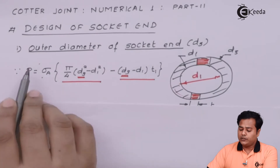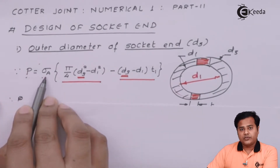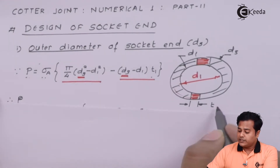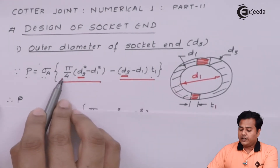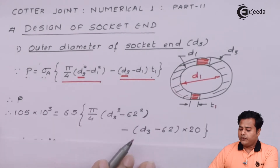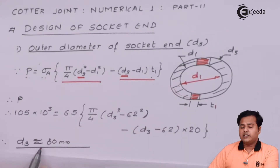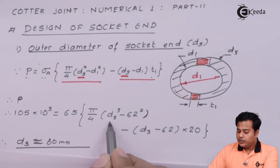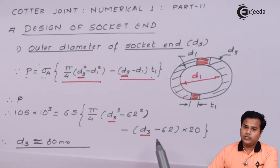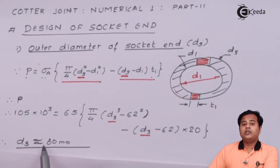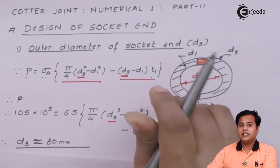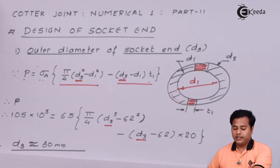After substituting the values for axial load P, allowable tensile strength, and thickness T1 which we have already calculated, we solve the expression. You can use the equation/expression mode of your calculator to solve when the unknown D3 appears in multiple terms. The answer is approximated to D3 equals 80 mm. So the preferred outer diameter of the socket end is 80 mm — that is our first finding.